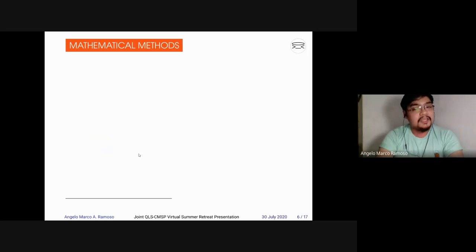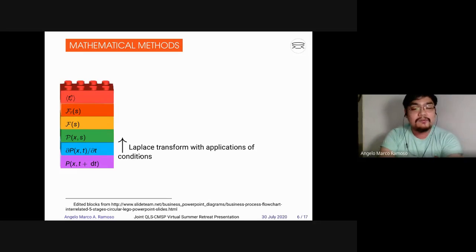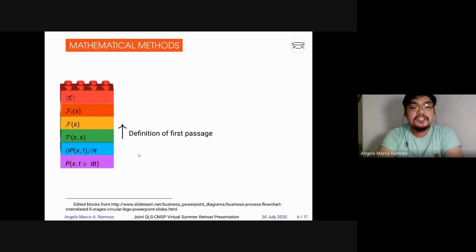So, the mathematical methods for this is, first, from our evolution of probability, we will use Taylor expansion to get the probability rate. After that, we will take the Laplace transform with the application of our conditions, boundary conditions, continuity conditions, and initial conditions. We will get the Laplace transform. After that, there's a definition of first passage that will connect the Laplace transform of probability distribution to the first passage time distribution. And then, we will add the setting, then there's a definition of moments from this.